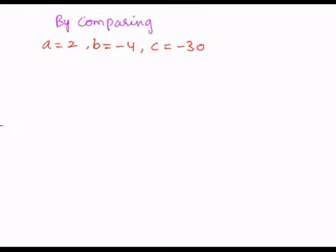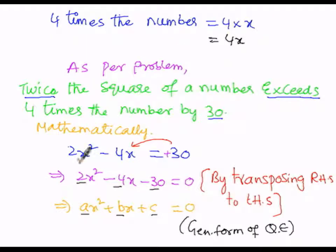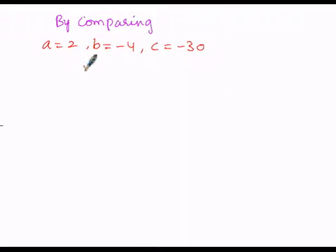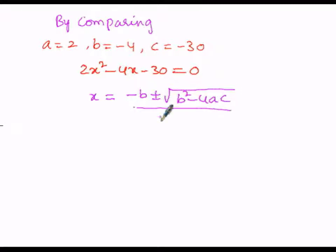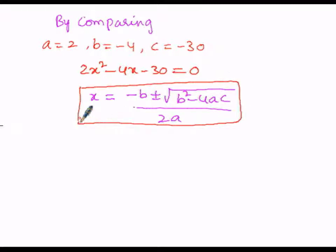The quadratic equation we obtained is 2x² − 4x − 30 = 0. Since it is of second degree, it has two roots. The roots can be obtained using the formula x = (−b ± √(b² − 4ac)) / 2a. By substituting the values of a, b, and c into this formula, we can find the roots.